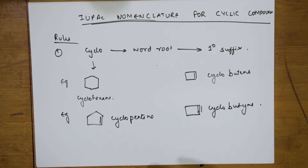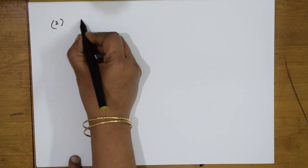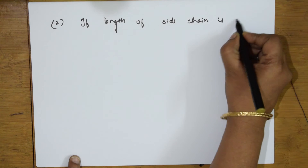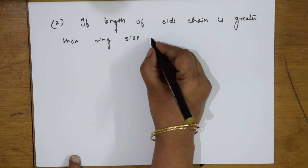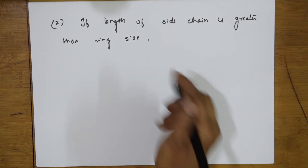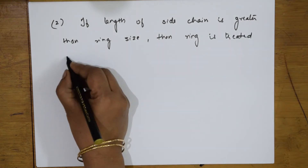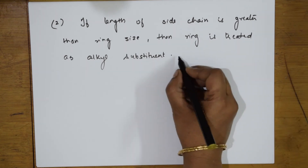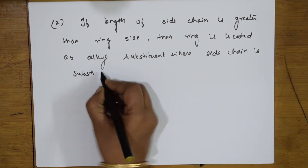Now let us see a further extension. The second rule: if the length of the side chain — the longest chain we are going to take — is greater than the ring size, then the ring is treated as an alkyl substituent, and the side chain is treated as the substituent.